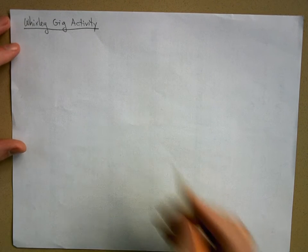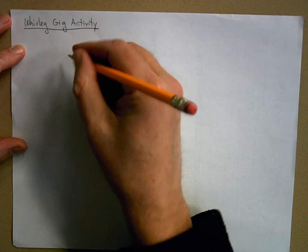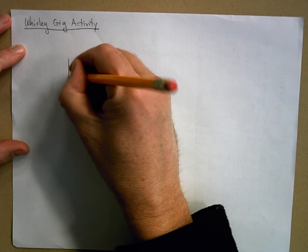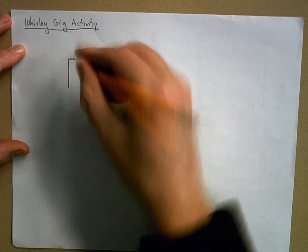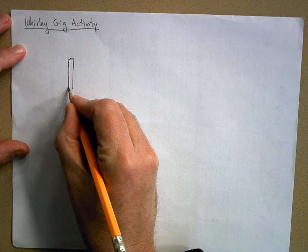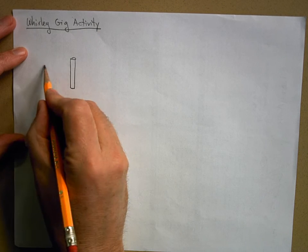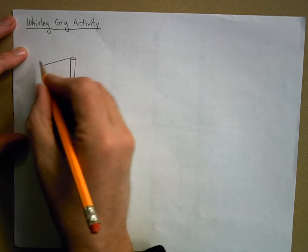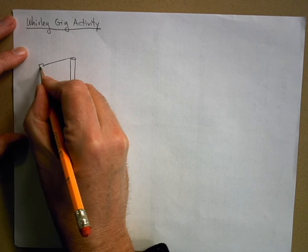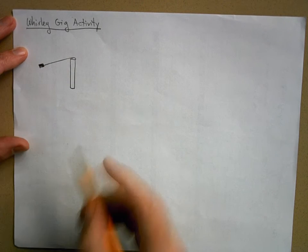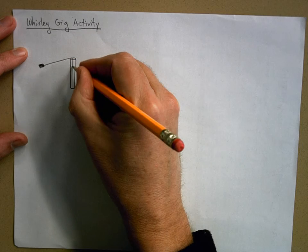We're going to review some concepts needed for the whirligig activity. I'll draw a sketch of what's involved: you've got a little PVC pipe, about eight or nine inches long, and then it attaches to a string connected to a rubber stopper.